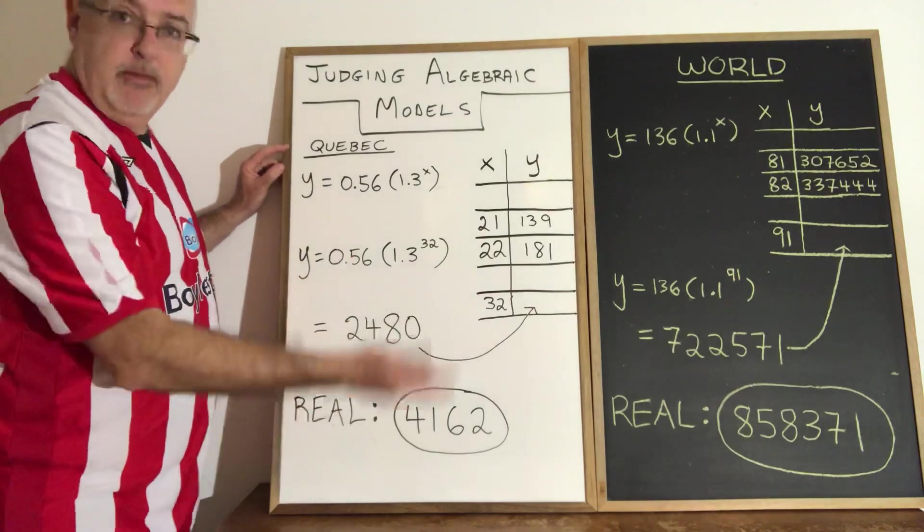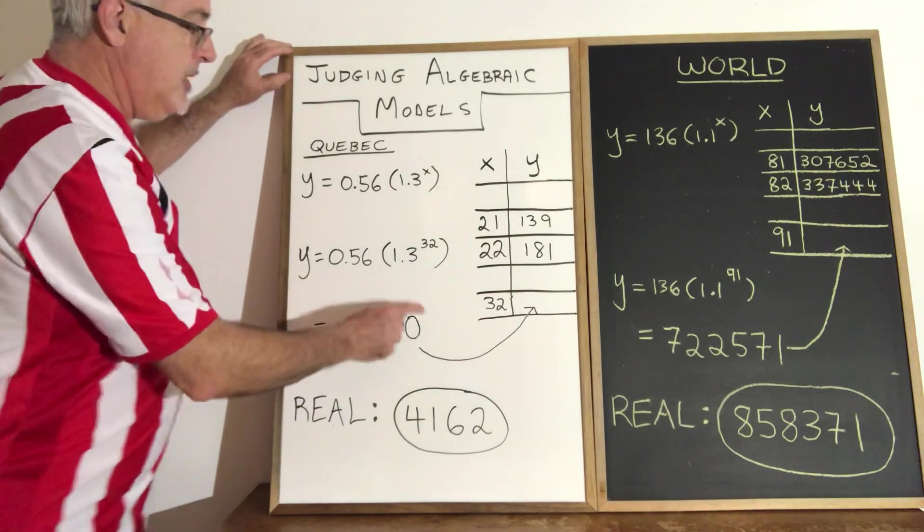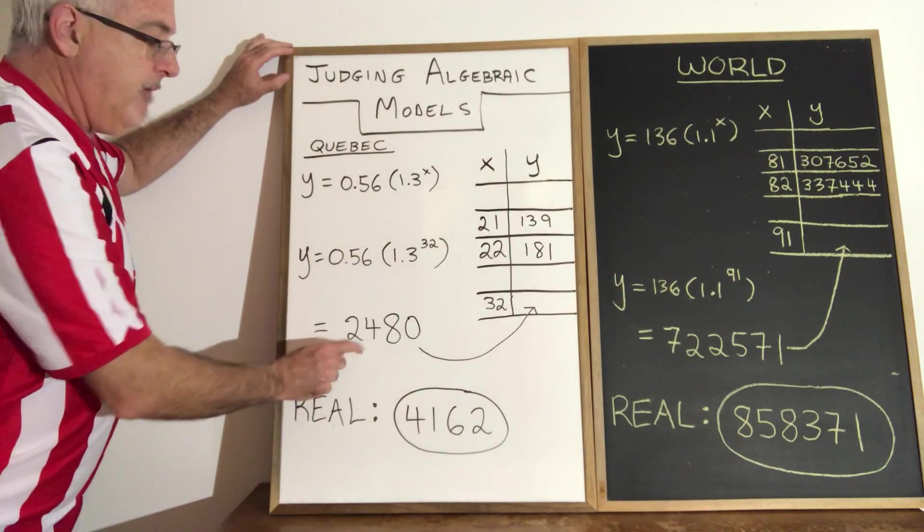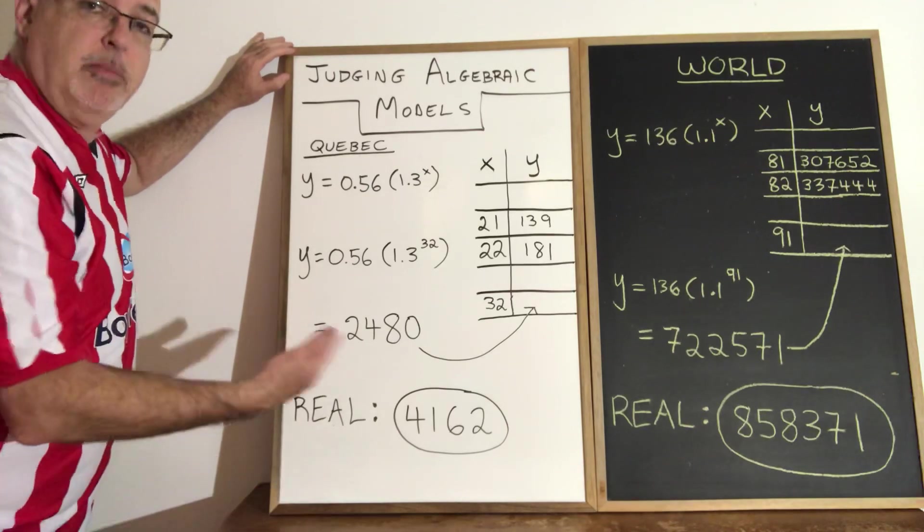The day that we made the model was March 23rd, so we were predicting for eight days in the future. March 31st when plugged in gave a value of 2480. That was our predicted value.